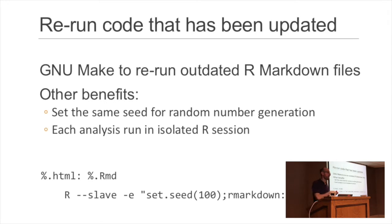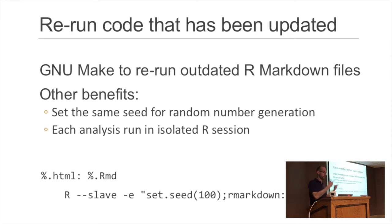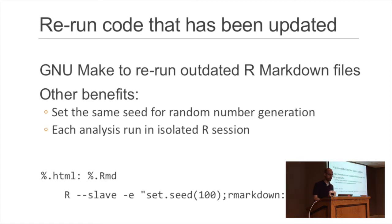Other benefits of this setup: we use set.seed, so the same seed is set before every analysis for random number generation. Each analysis is a new call to R, so all analyses are reproducible because they can't conflict with each other — each time it spins up a new R process to build the file.